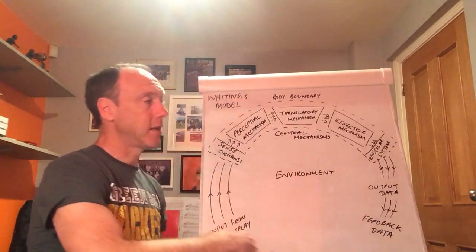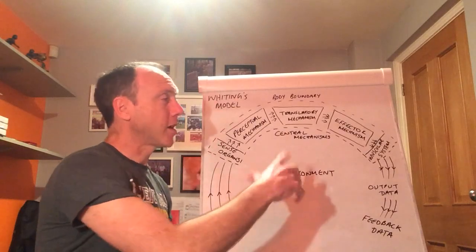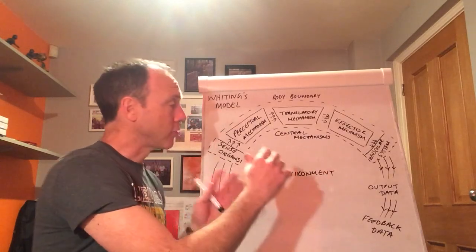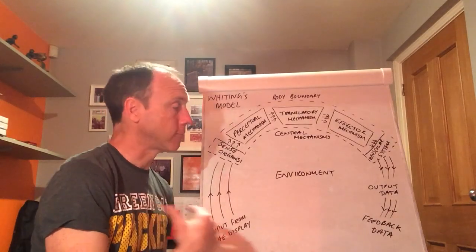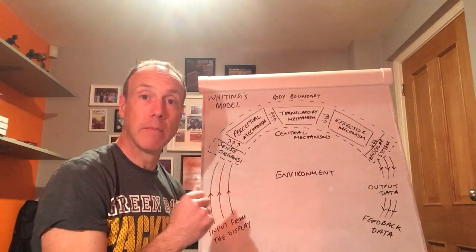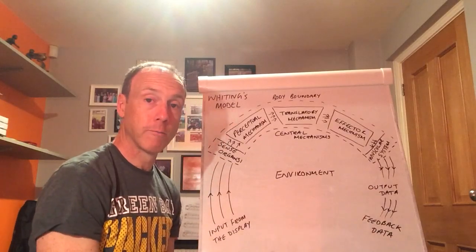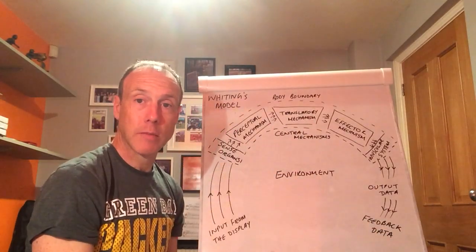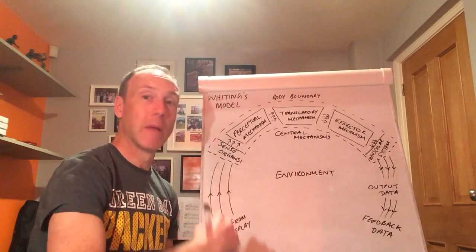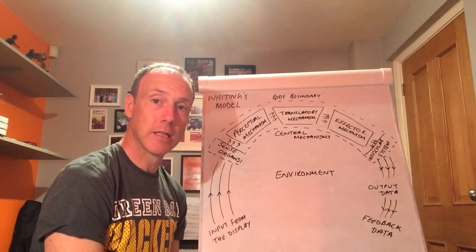But I also have extrinsic data, almost like knowledge of results. So I can see that my teammate has received the ball. I can see that the defender has tackled me and been committed to the tackle. And I can see my teammate go over the try line to score. And then that will continue to feed my perceptual mechanism and translatory mechanism next time I find myself in that situation.